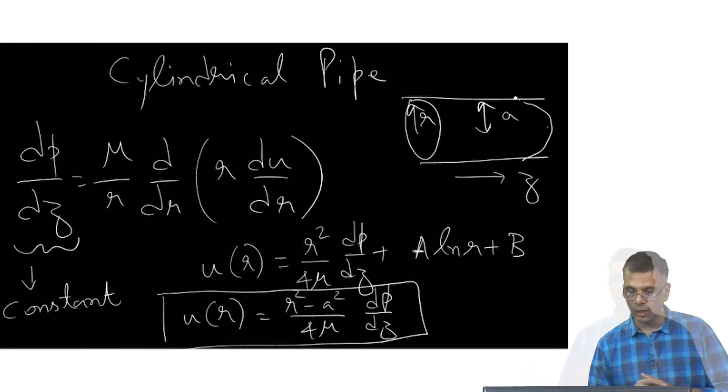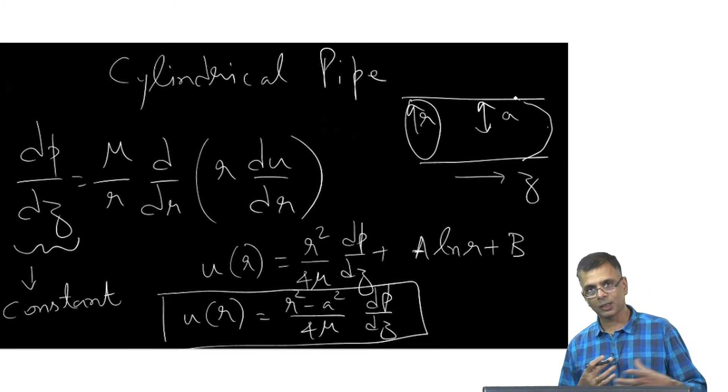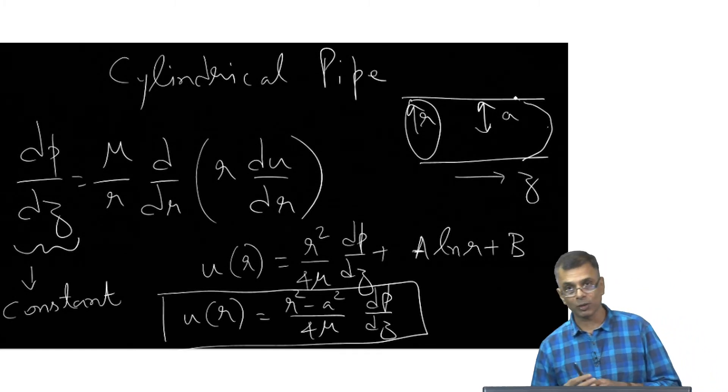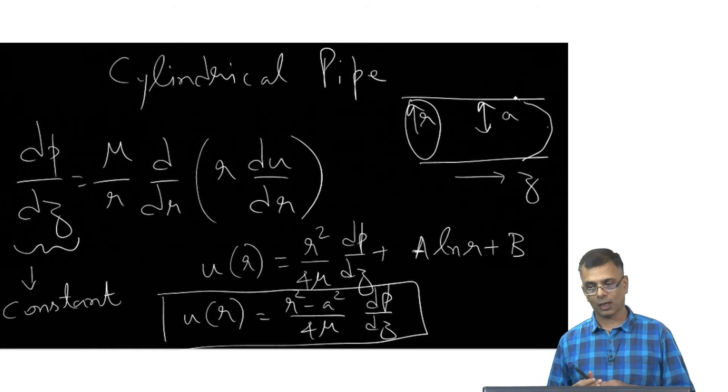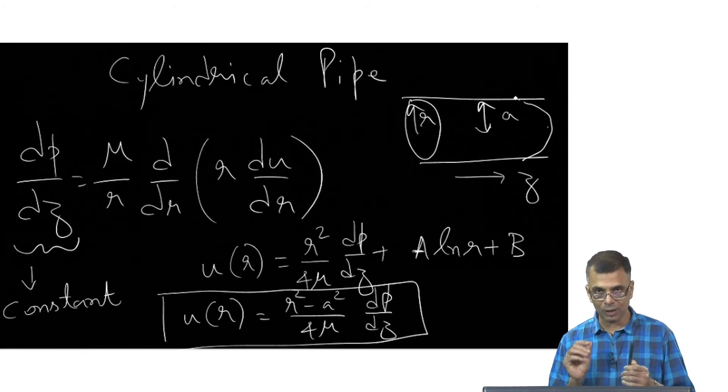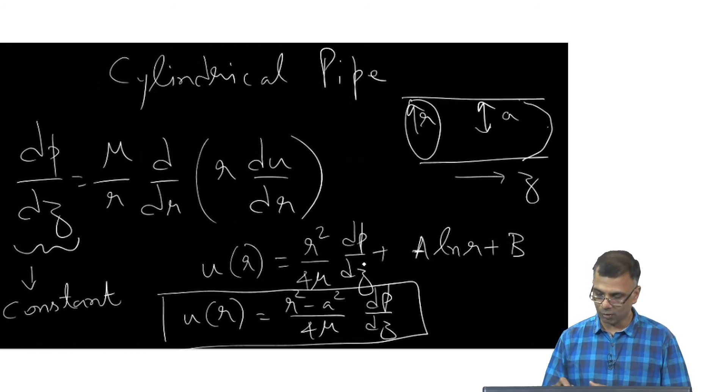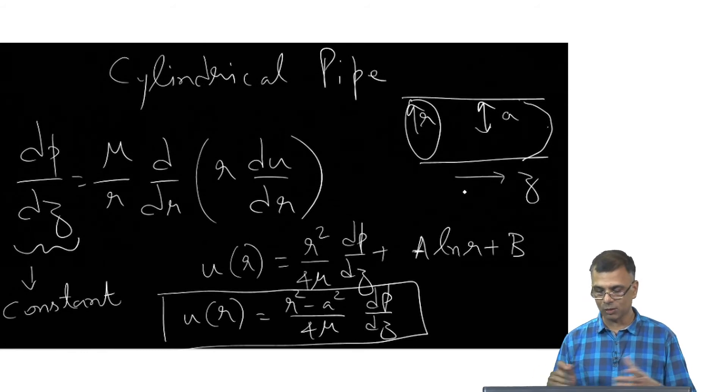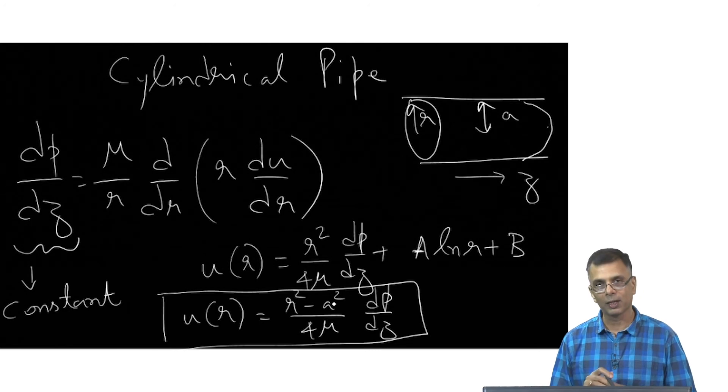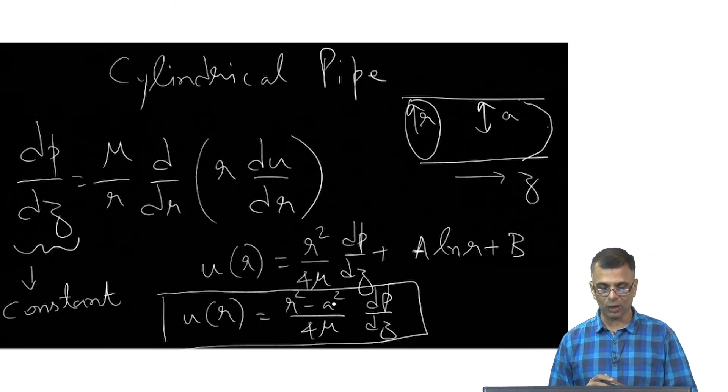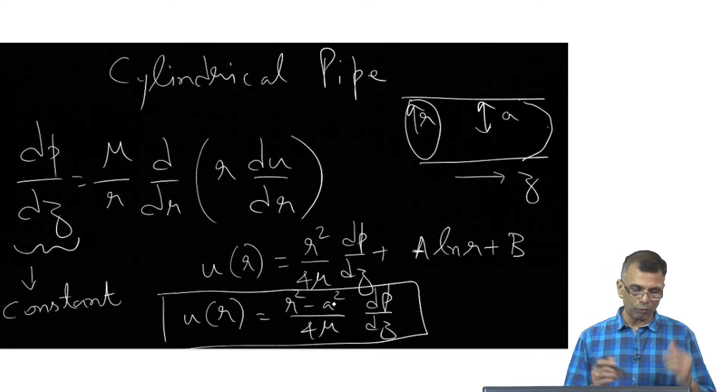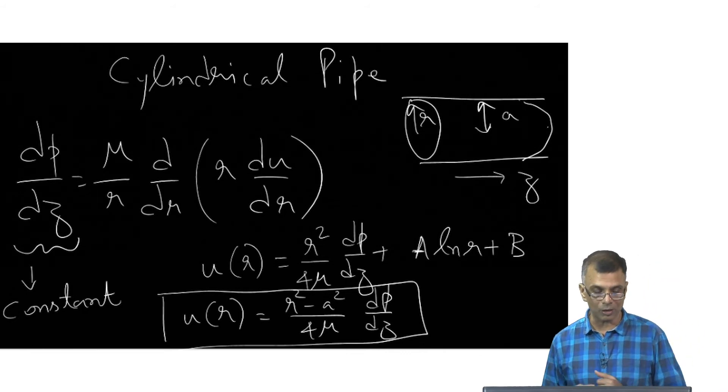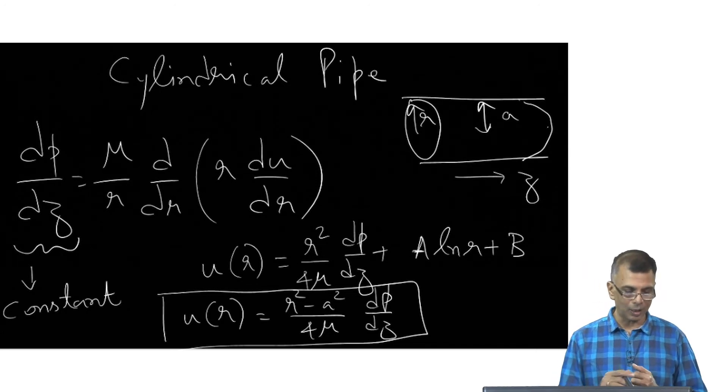The particular solution is u = (a²/4μ)(dp/dz)(1 - r²/a²), where a is the radius of the pipe. This profile also looks parabolic with a maximum at the center and zero at the ends. This is the solution for flow of viscous fluid inside a cylindrical pipe. I figured I'd introduce these simple examples of solutions to the Navier-Stokes equation.